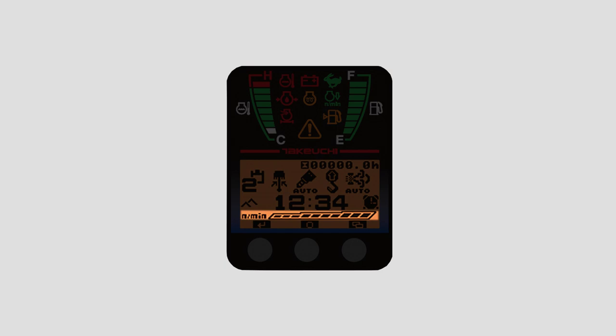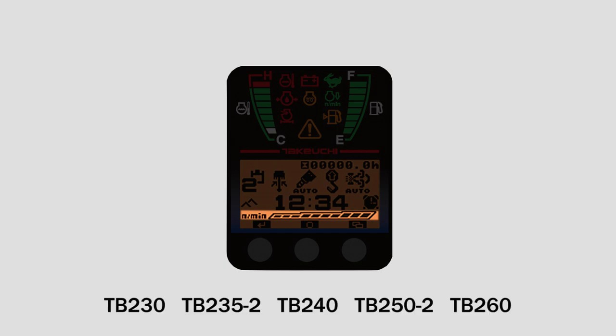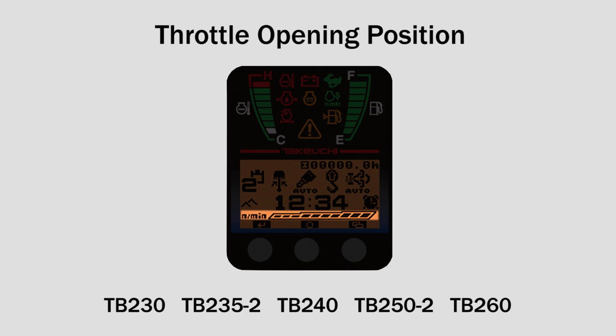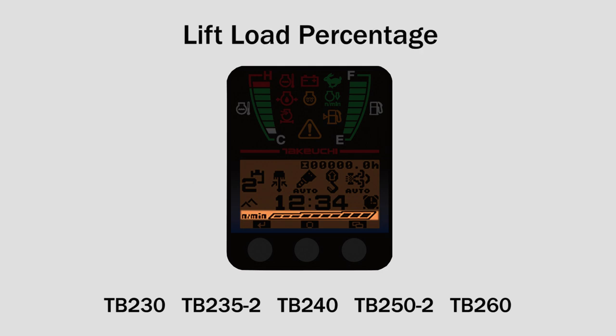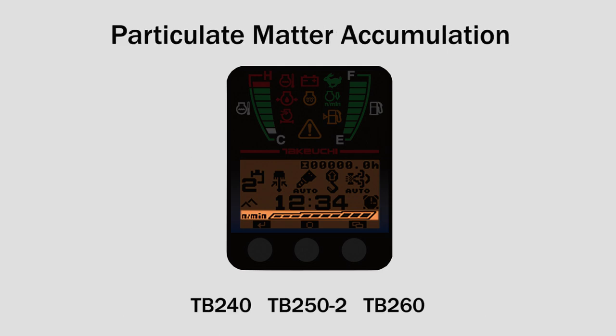The bottom of the LCD display features a meter that can be changed to several different settings: throttle opening position, lift load percentage, and particulate matter accumulation.